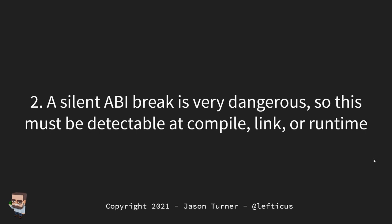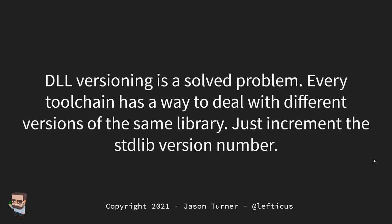On objection two: DLL versioning is a solved problem. Every toolchain has some way to deal with different versions of the same library. We've been doing this for decades with C libraries — there's no reason we can't do it with the C++ standard library, perhaps with some sort of tag in the binary saying this was compiled with a version that had an ABI break. I believe this is already solved by our tool vendors.